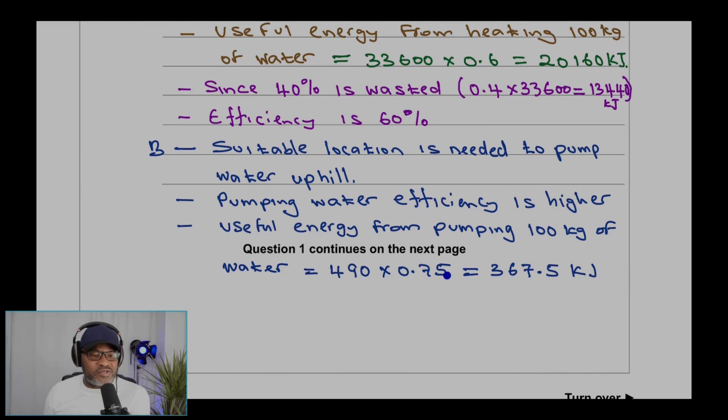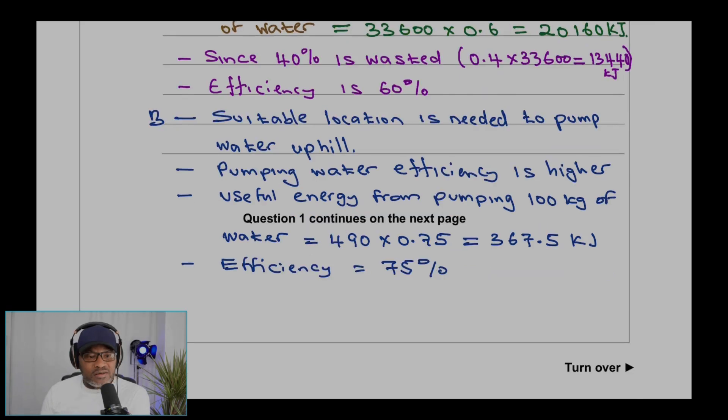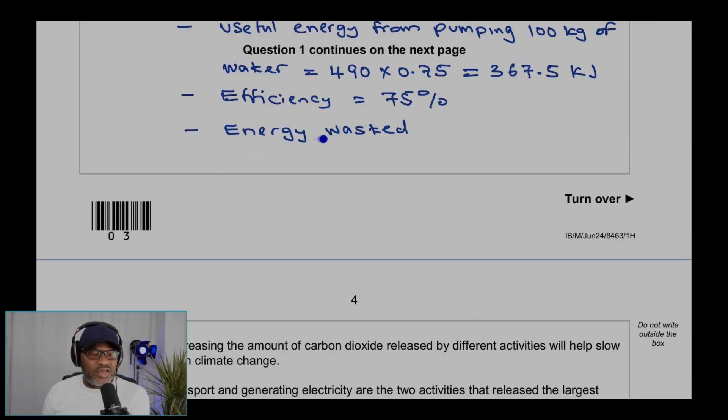So that would be 490 times 0.75, which is 75% (75 over 100), and that gives you 367.5 kilojoules. And we know the efficiency is 75%.